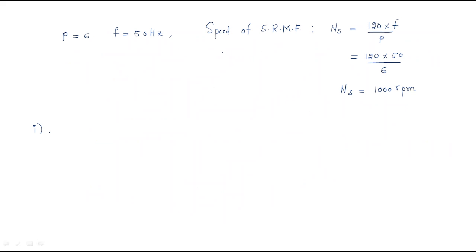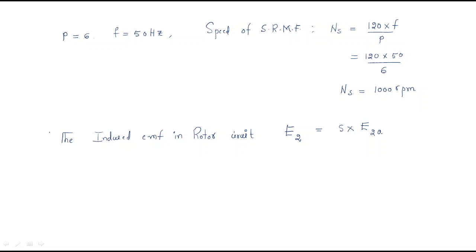We have a relation for the induced EMF in the slip rings. The induced EMF in the rotor during running condition is: E2 = slip × E2_0, where E2_0 is the standstill EMF. The standstill EMF is the EMF at standstill position, and multiplying it by slip gives the running EMF.